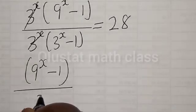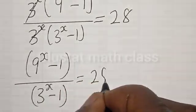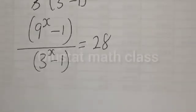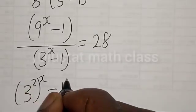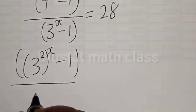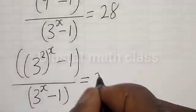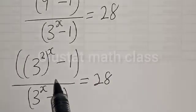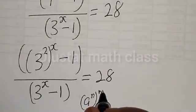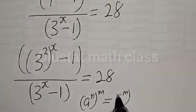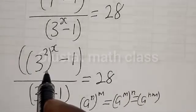Then 9 raised to power s minus 1, divided by 3 raised to power s minus 1, is equal to 28. Now, 9 raised to power s is the same as 3 raised to power 2s. Remember: if you have A raised to power N, raised to power M, that equals A raised to power N times M.